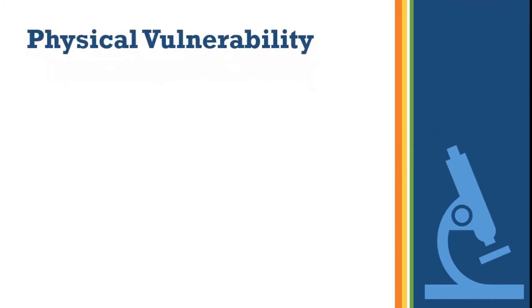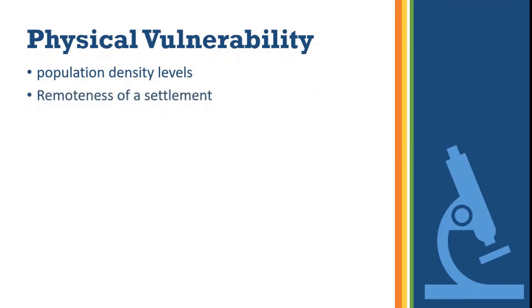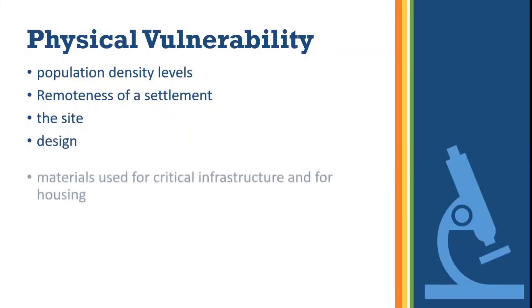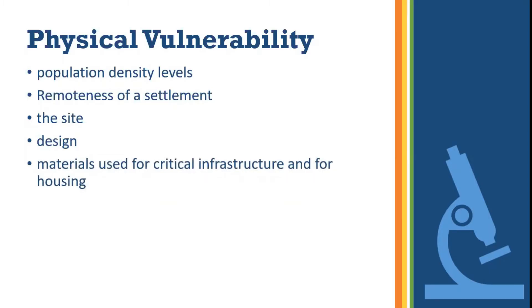Physical vulnerability may be determined by aspects such as population density levels, remoteness of a settlement, the site, design, and materials used for critical infrastructure, and housing. When we say physical vulnerability, it is more focused on the physical aspect of a setting — the amount of population in a place, the remoteness of a settlement, and the buildings or infrastructure.